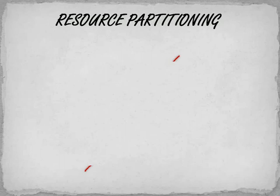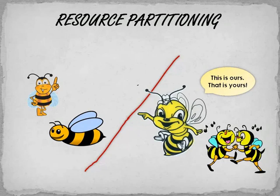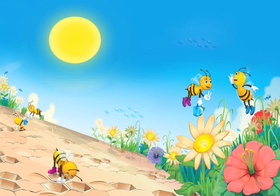Recent studies have shown that species have evolved mechanisms such as resource partitioning, where two competing species avoid competition by either choosing different times for feeding or by partitioning their feeding grounds. A detailed research done on bumblebees in Colorado showed that different species of bumblebees were adapted to draw nectar from a very specific category of flowers, hence very conveniently partitioning their territories.